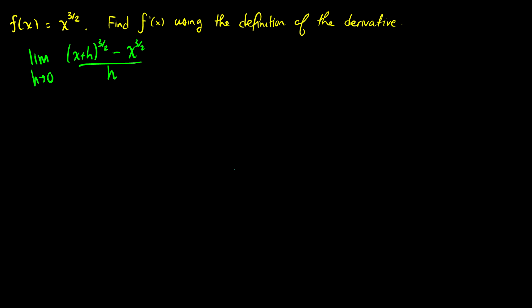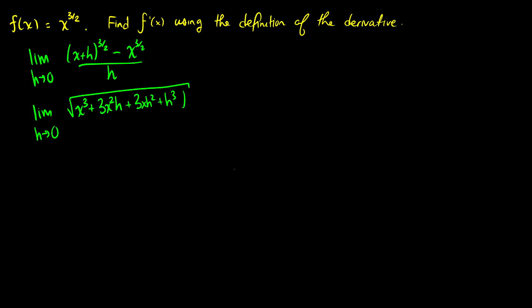Let's expand this a little bit. We want the limit as h goes to zero. What we'll do is cube it first — so when we cube it we're going to get x cubed plus 3x squared h plus 3xh squared plus h cubed. We still need to take the square root of this, and we subtract the square root of x cubed. This is all over h.